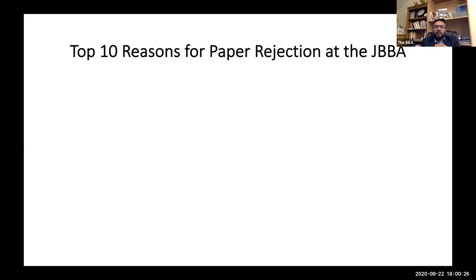Lack of novelty is another important reason. At the JBBA we are not too focused on that, but in some journals your paper has to be novel — a new idea, a unique perspective or topic. Plagiarism is another big one. We don't get that many plagiarized papers, but if your paper has any hint of plagiarism, not only will it get rejected straight away before it even goes to reviewers — because we carry out these checks before sending papers to reviewers — but there's also the possibility you will get blacklisted from any future submissions to the journal.